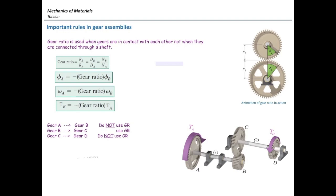So the gear ratio is simply defined as the ratio between the diameter of two gears when they are connected together, or the radius of two gears, or the number of teeth between two gears that are connected together. So all of them are equal to each other.